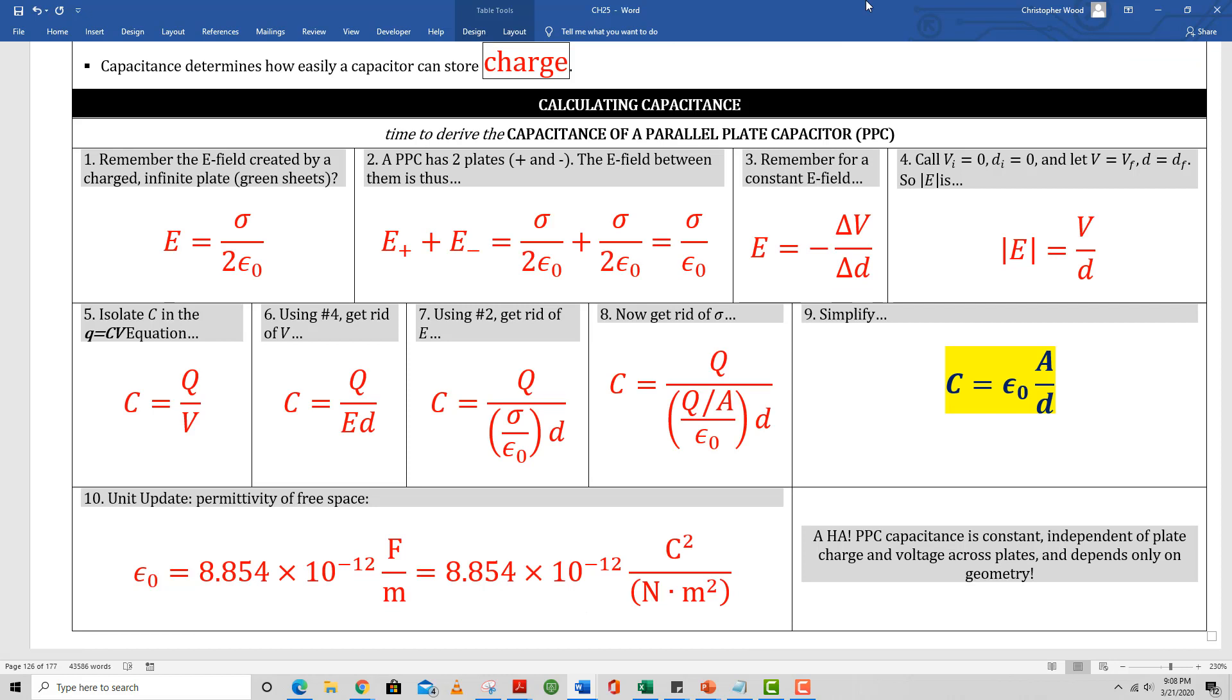Okay, it's time to derive the capacitance of a parallel plate capacitor. Go through boxes one through ten really carefully. This is a great derivation because we dust off the expression for the electric field produced by a charged plate, which we actually derive twice, once in Chapter 22 and once in Chapter 23. Box number three is reminding us that the electric field can be determined by the gradient of the voltage. Box number nine is our capacitance of a parallel plate capacitor.